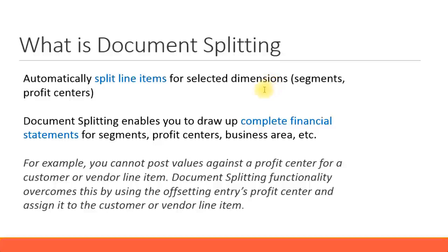Document splitting automatically splits line items for selected dimensions, also called characteristics. It's most useful for segments or profit centers. For example, if you want to have a full balance sheet and a P&L statement for a profit center — the P&L statement is easy to derive because all revenue and expense accounts are automatically captured in the profit center. However, for some balance sheet accounts such as customer or vendor accounts, you cannot put the profit center against them directly, so document splitting enables you to produce complete financial statements for segments and profit centers.